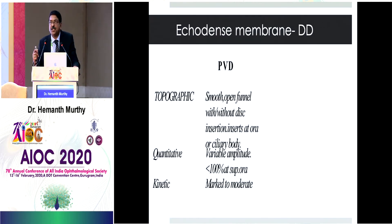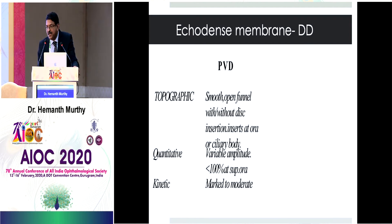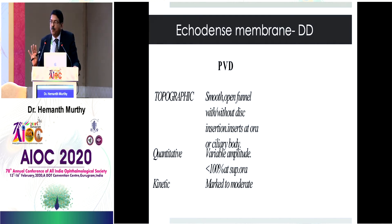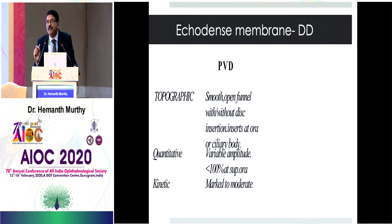There are three conditions you are generally asked to differentiate: the posterior hyaloid, retinal detachment, and choroidal detachment. Three aspects help make the difference: topographic analysis, quantitative analysis, and kinetic analysis. In topography, the posterior hyaloid can have an insertion at the disc or it might not, but it is always inserted at the ora. On quantitative ecography, it is always less than 100% reflectivity, as opposed to 100% reflectivity in retinal detachment.